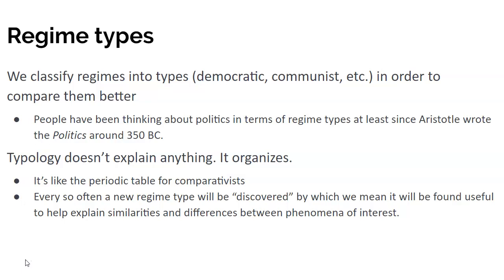People have been thinking about politics in terms of regime types at least since Aristotle wrote the Politics around 350 BC. It's worth noting that typology doesn't explain anything, however — it organizes our information. It's like the periodic table for comparativists. Every so often a new regime type will be discovered, by which we mean it will be found useful to help explain similarities and differences between phenomena of interest.